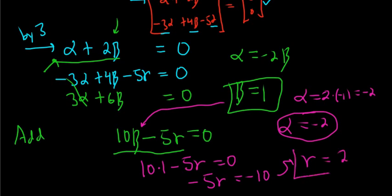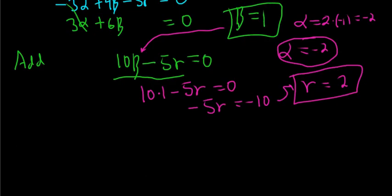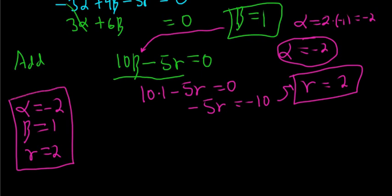So now we have alpha, beta, and gamma. Yay, it worked. I'm so happy that that worked. So what do we have? We have alpha negative 2. So alpha is negative 2. Beta is 1. And gamma is 2. So these are our coefficients.